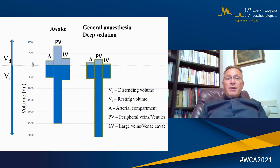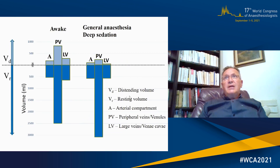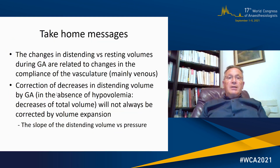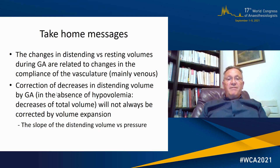When you give a patient general anesthesia or heavy sedation, the distending volume increases mainly in the peripheral veins and venules, and somewhat less in the large veins. The take-home message is that changes in distending versus resting volume during general anesthesia are related to changes in vascular compliance, mainly venous. Correction of decreased distending volume by anesthesia — in the absence of true hypovolemia — will not always be achieved by volume expansion alone, because the slope of the distending volume versus pressure relationship is shallower. Thank you for your attention.